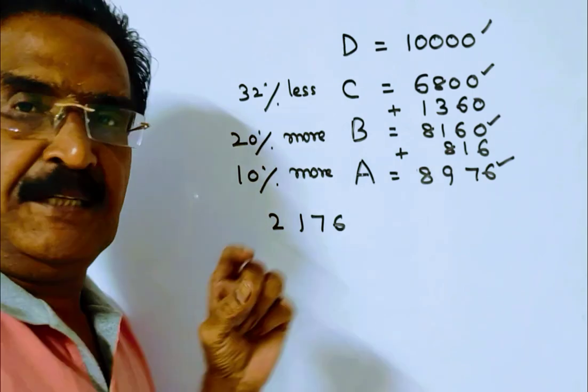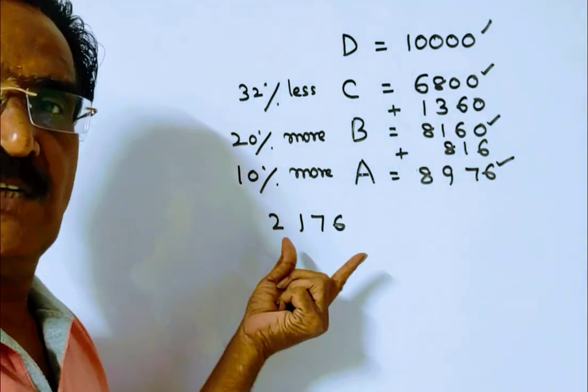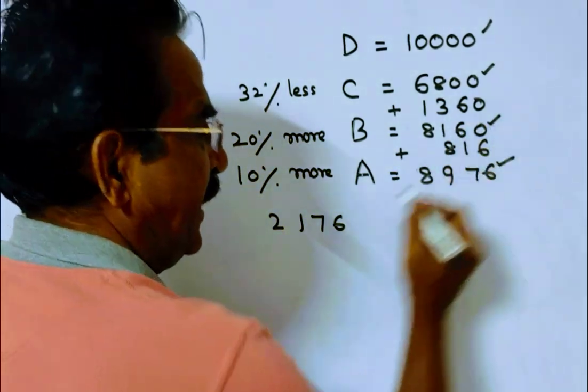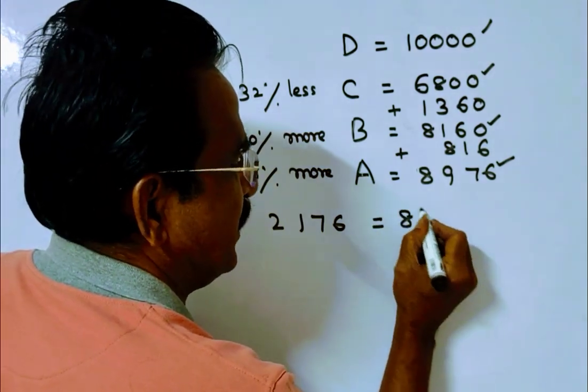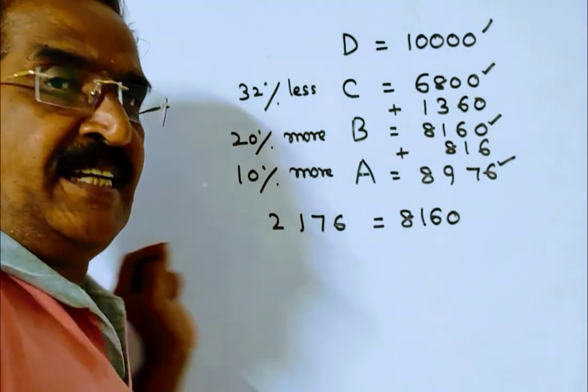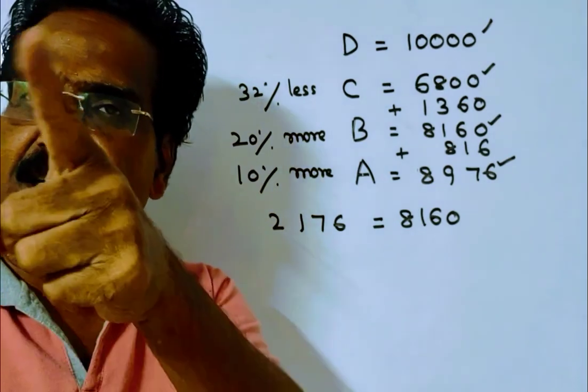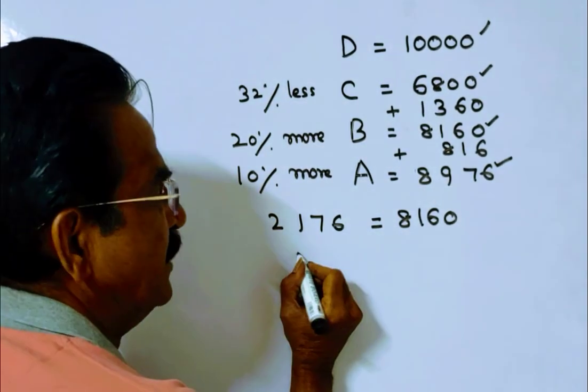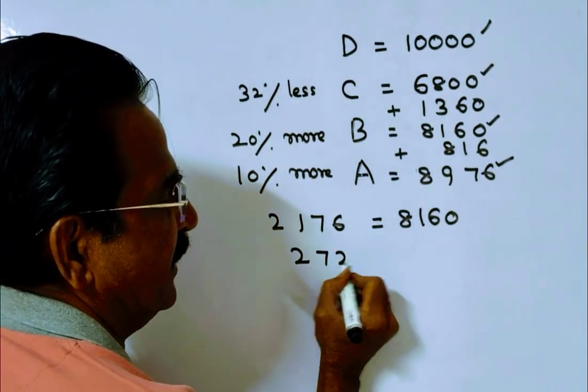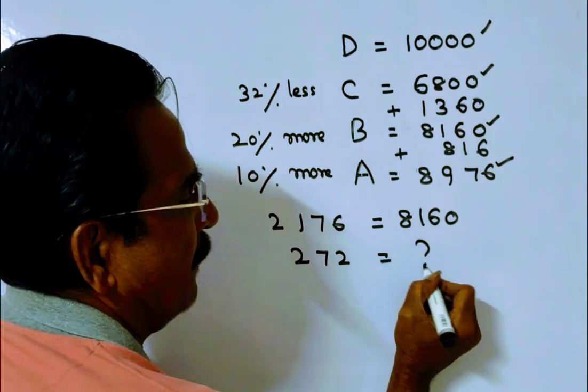If the difference between A and C is 2,176, the marks obtained by B is 8,160. But it is given the difference between A and C is 272. If the difference between A and C is 272, what is the marks obtained by B?